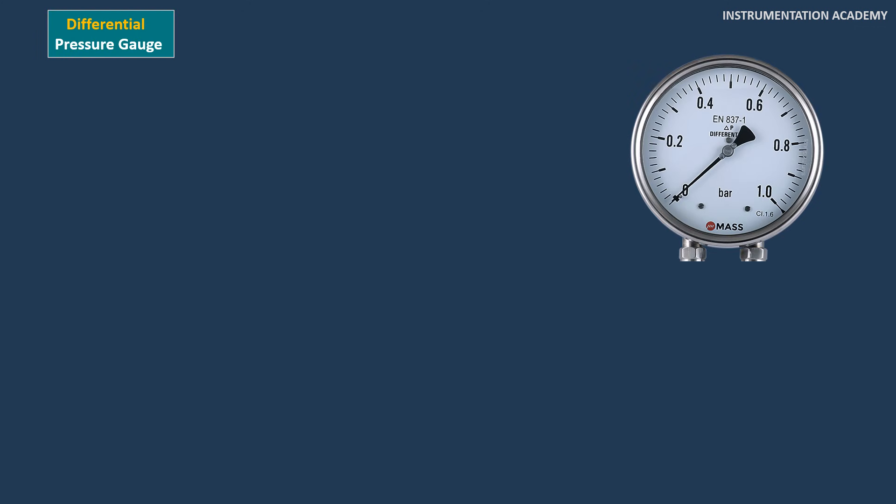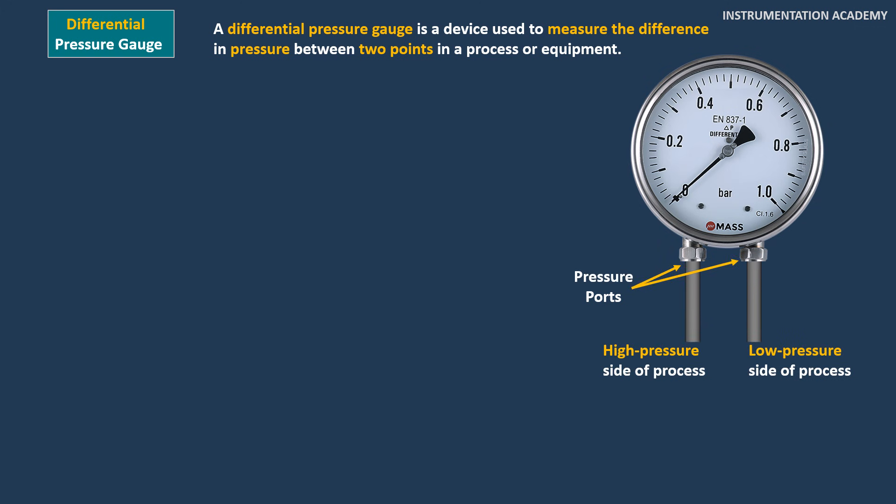A differential pressure gauge is a device used to measure the difference in pressure between two points in a process or equipment. It typically consists of two pressure ports, one connected to the high pressure side and the other to the low pressure side.